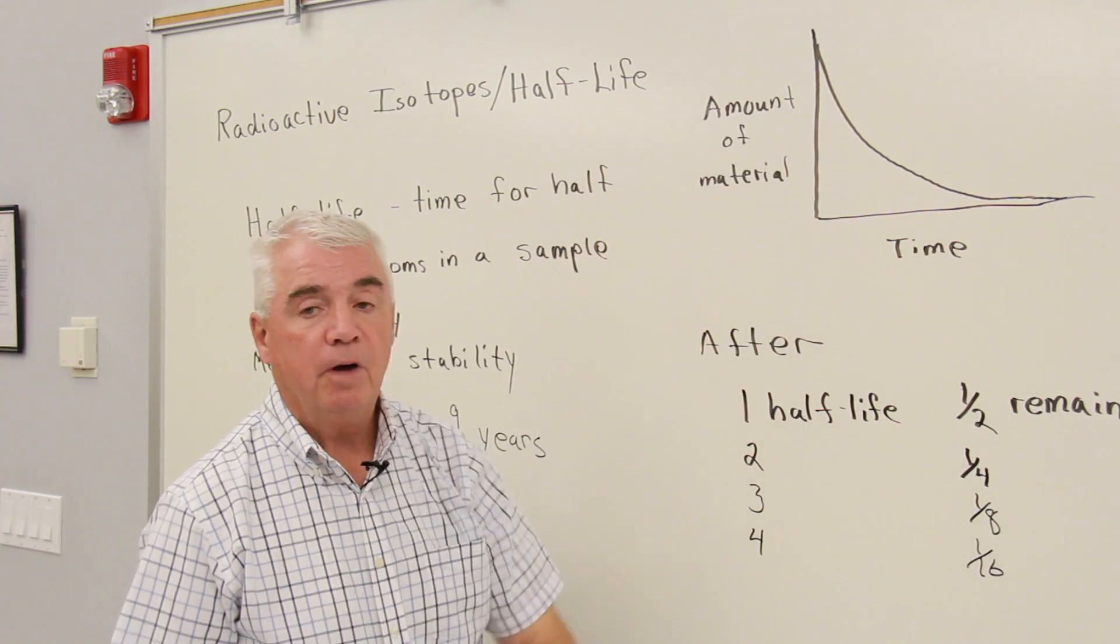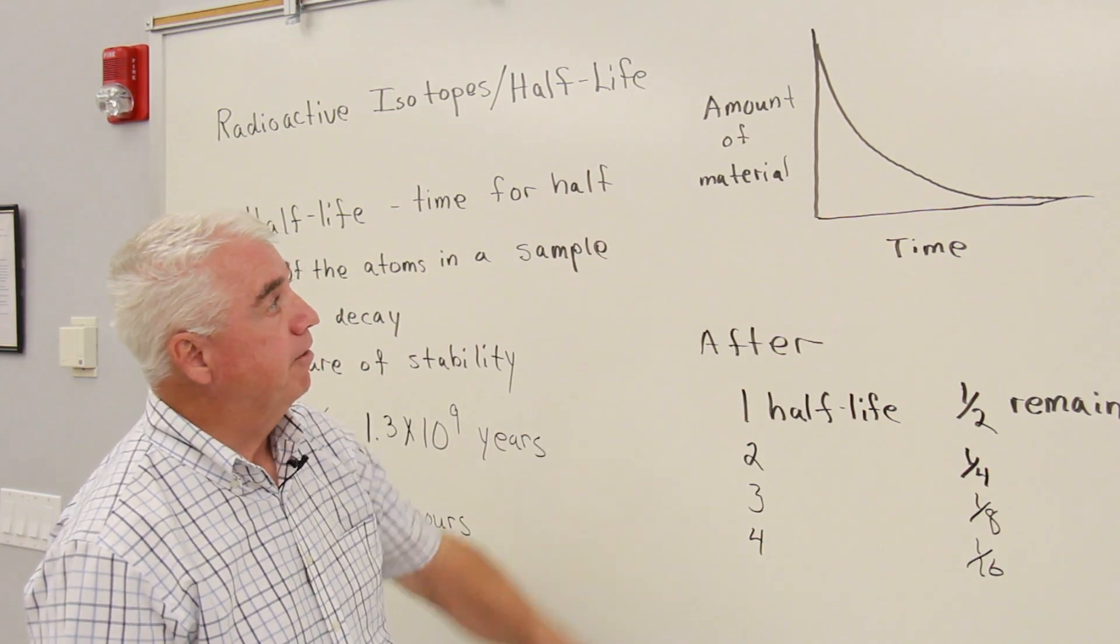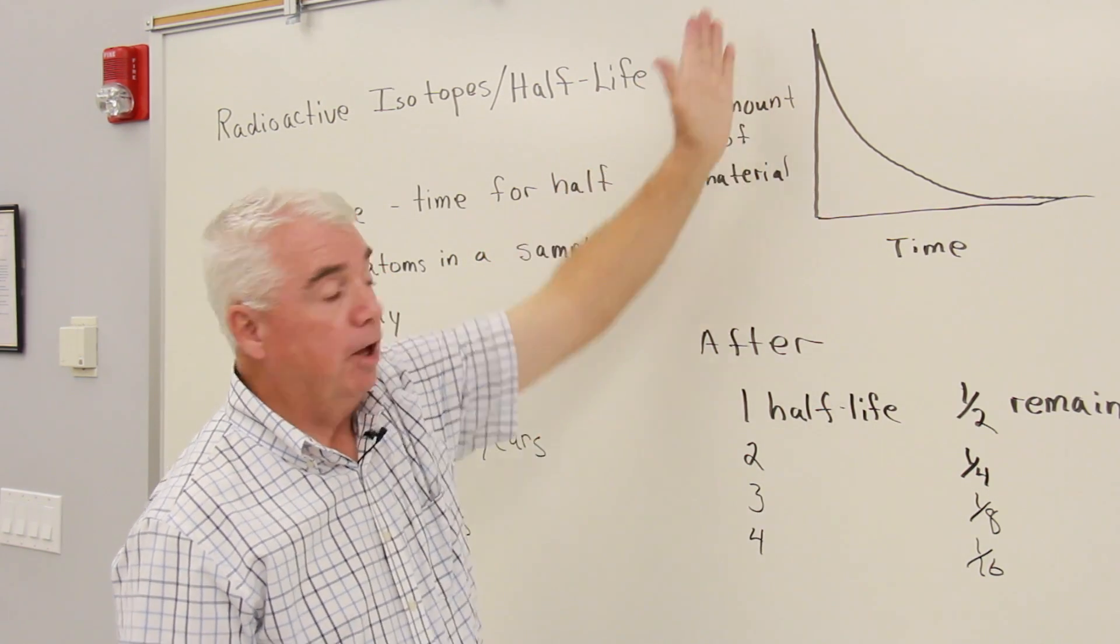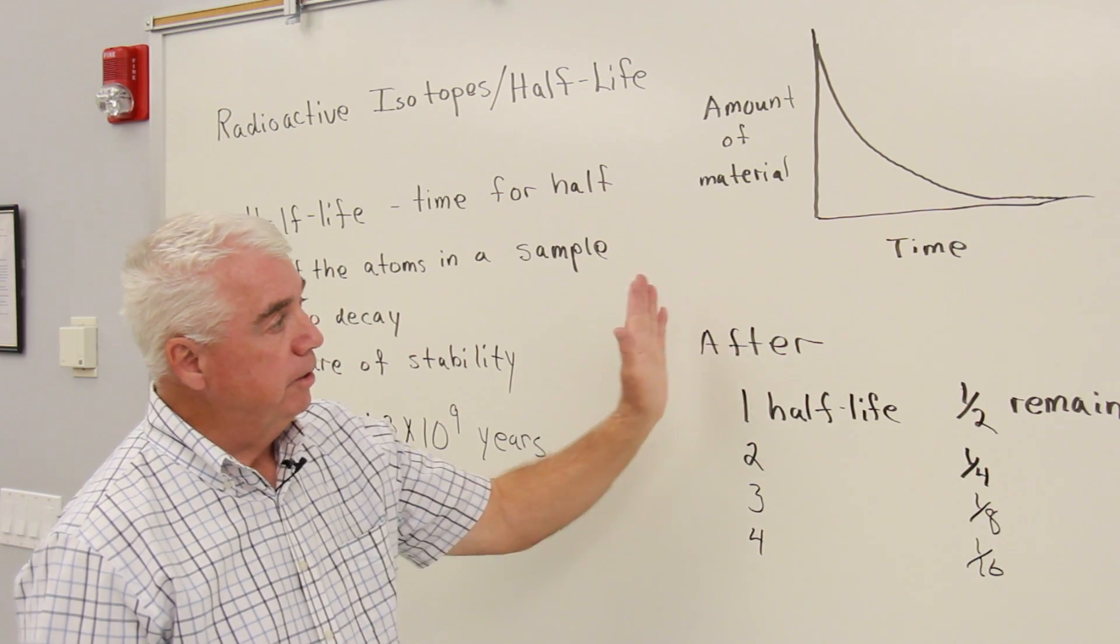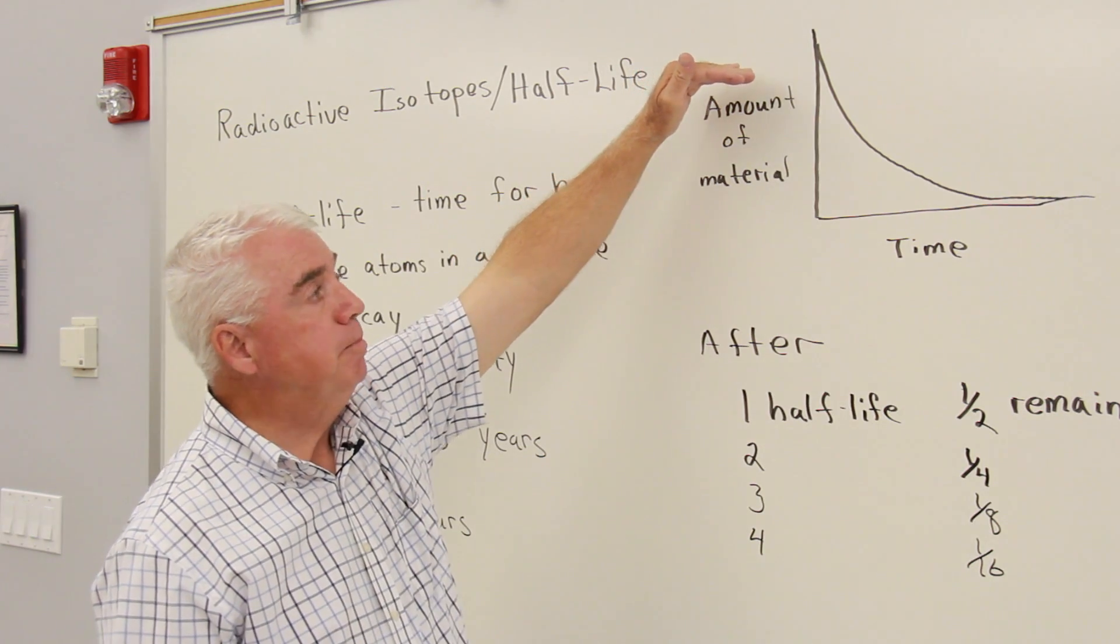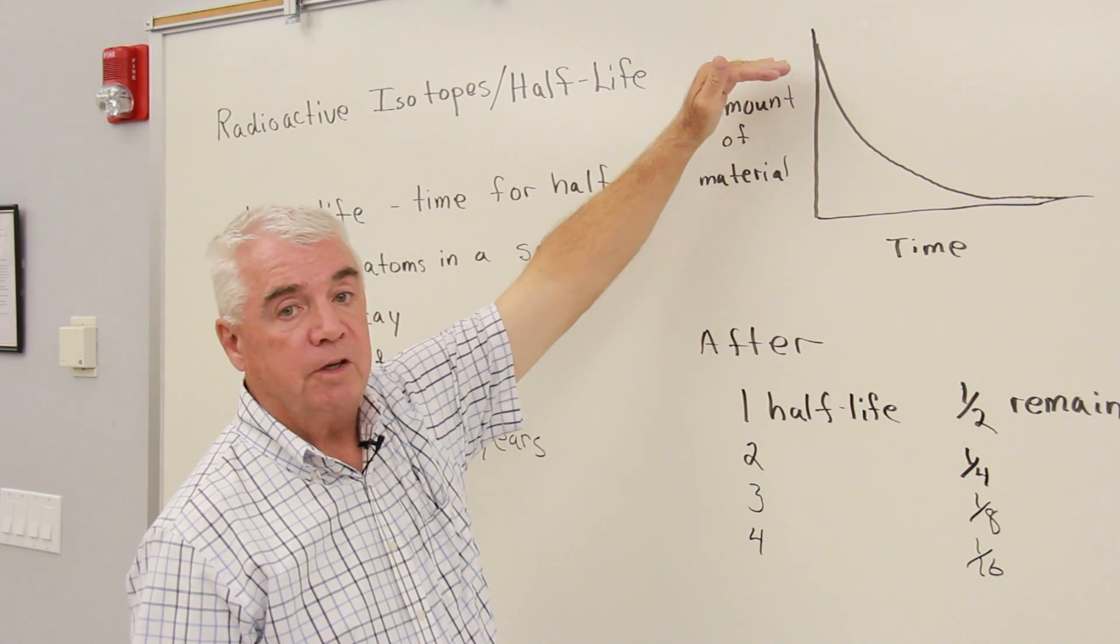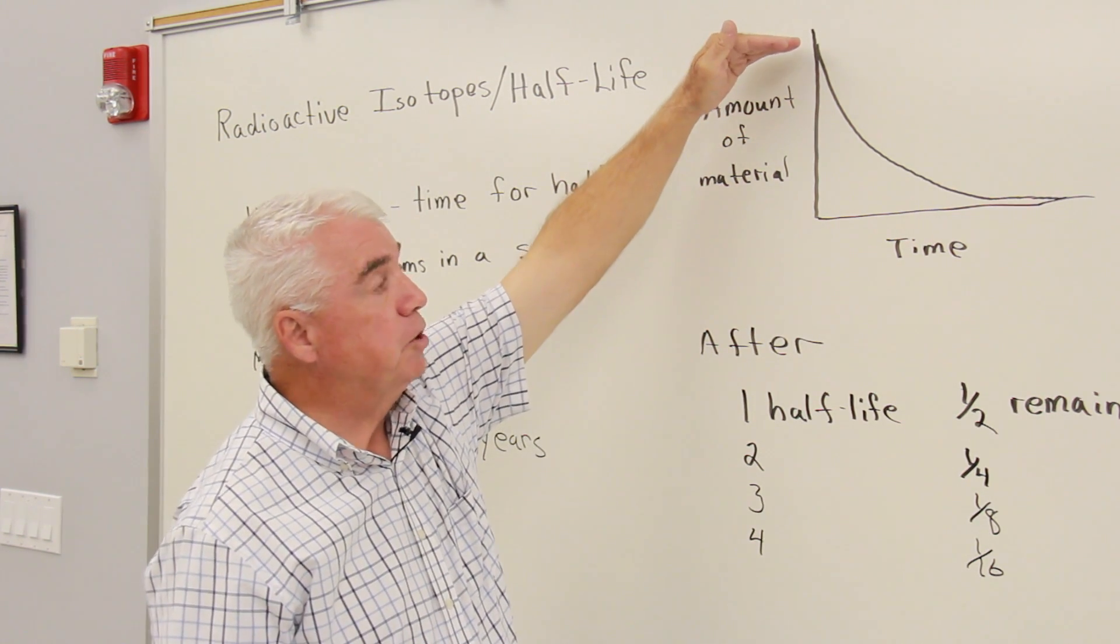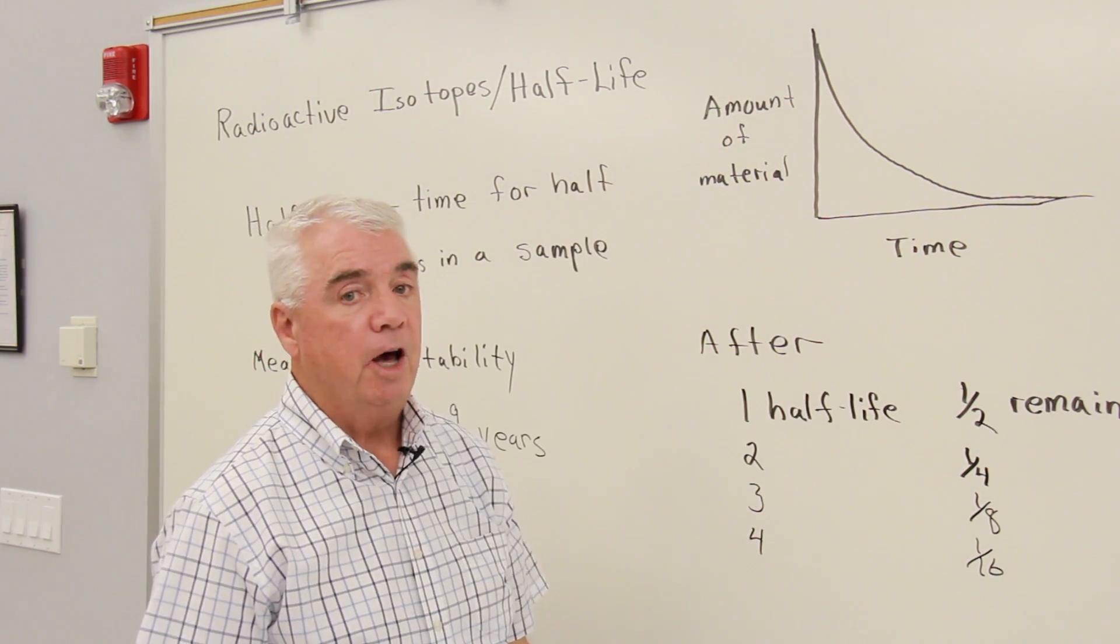Here's a graph that may help understand radioactive isotopes a little bit. If I start with a particular amount of material up here on this axis, the vertical axis, and the horizontal axis is time, with time this radioactive isotope disintegrates, it decays into something else, it gives off radiation, and so the amount of material that we had originally is decreasing with time.